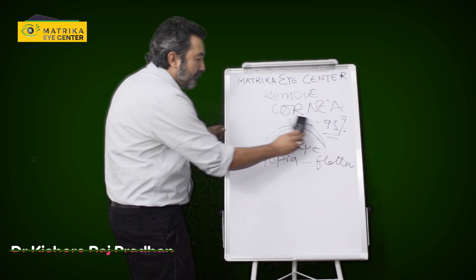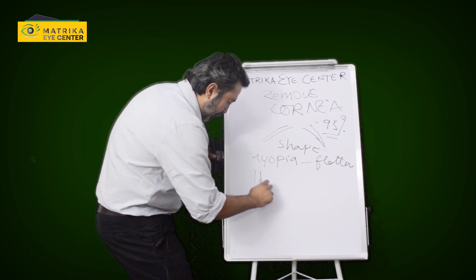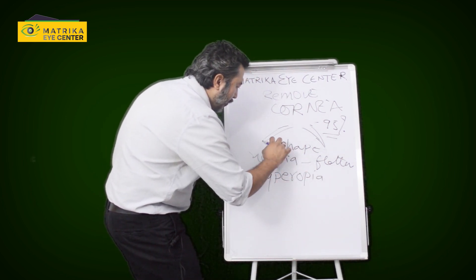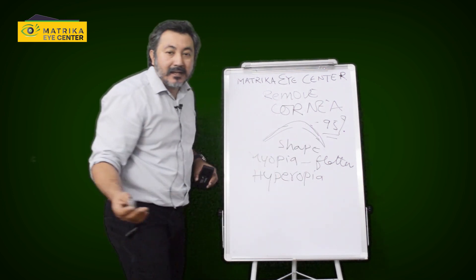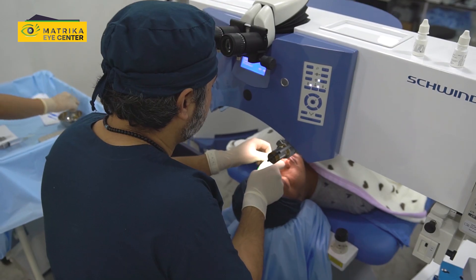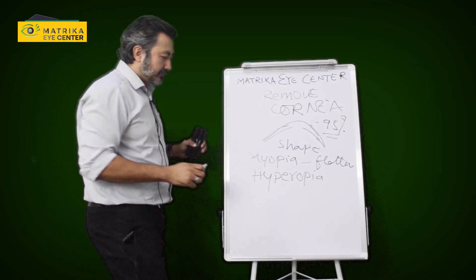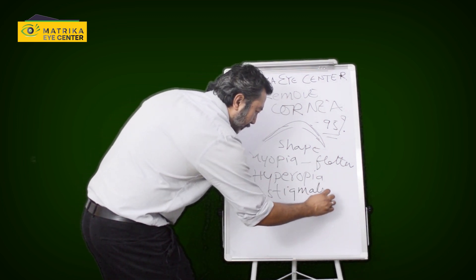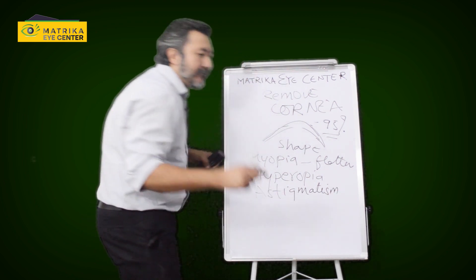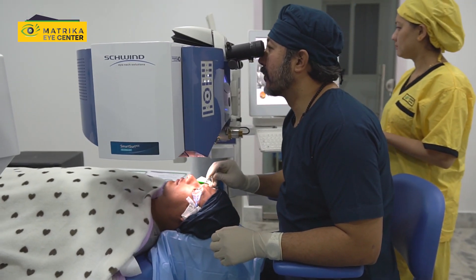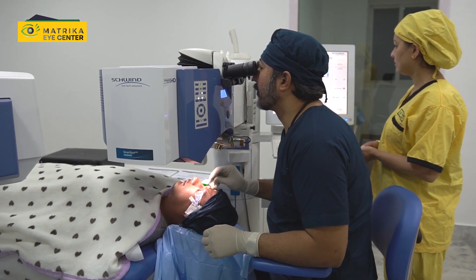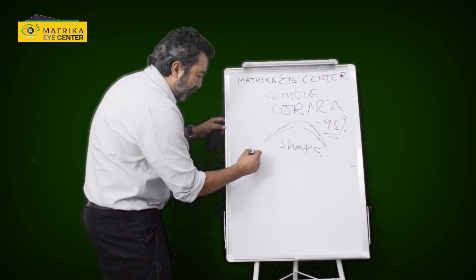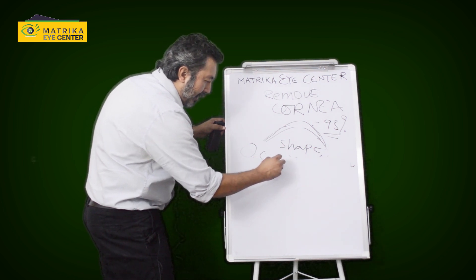In hypermetropia or hyperopia, you want to steepen the cornea by using the laser. You can use both lasers, the femtosecond laser and the Excimer laser. And in astigmatism, where you have a cylindrical power, you want to correct the steep axis or the flat axis. Basically, you're correcting the steep axis. So in astigmatism, an oval cornea can be turned into a round cornea.